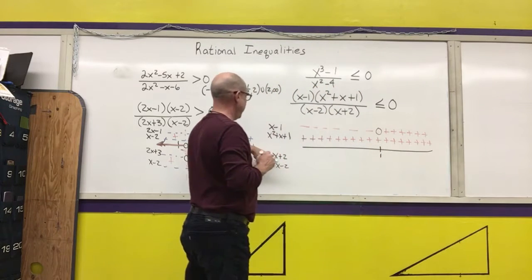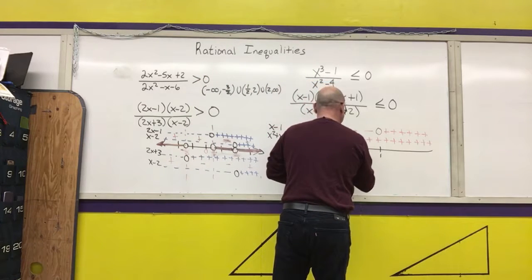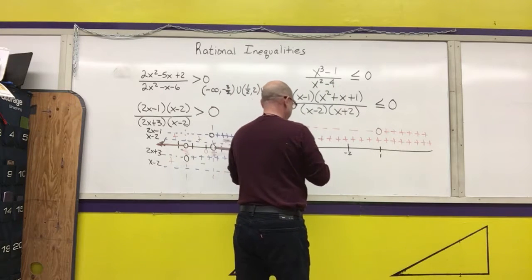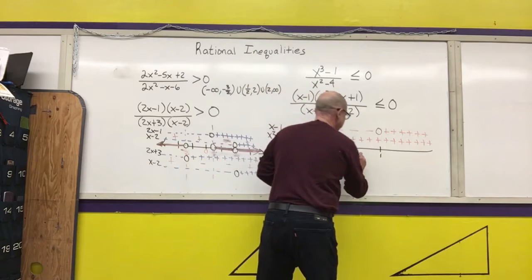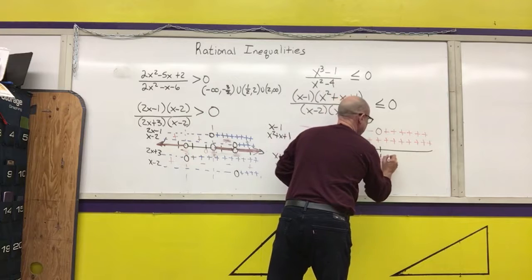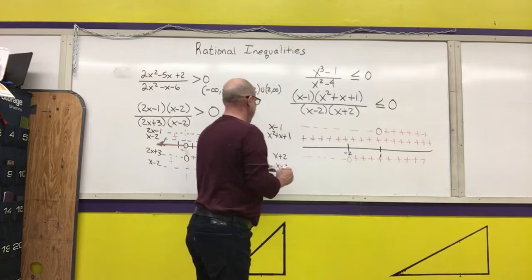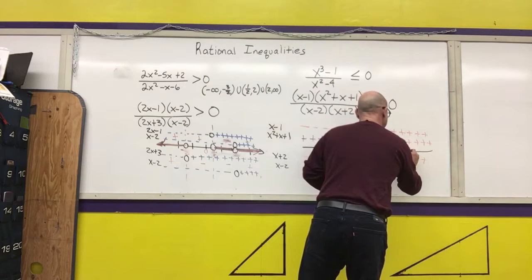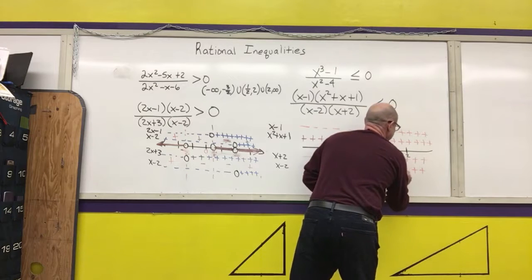In the denominator, I have a zero at negative two — to the right is positive, to the left is negative. When x minus two equals zero, I have a zero at positive two — to the right is positive, to the left is negative.